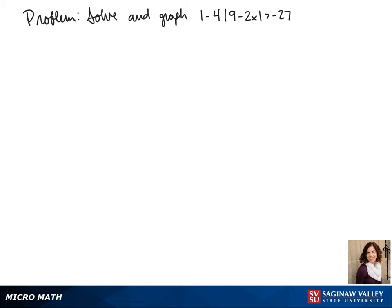Welcome to another day of algebra. Today we're solving and graphing the inequality 1 minus 4 times the absolute value of 9 minus 2x is greater than negative 27.